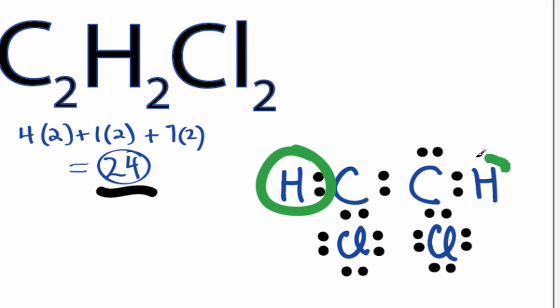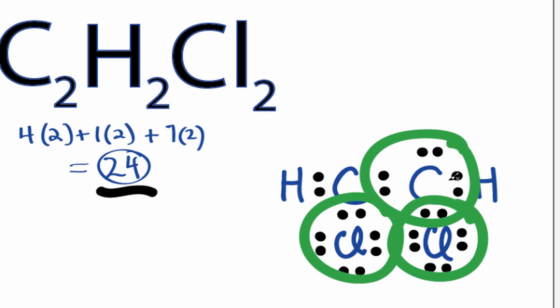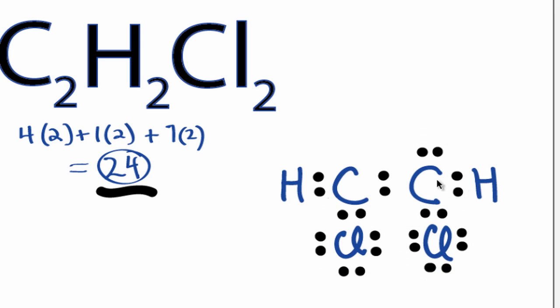Both hydrogens have 2 valence electrons, and that's all they need for a full outer shell. This carbon has 8, the chlorine has 8, and this chlorine has 8 as well. Their octets are completed. However, this carbon only has 6, so we're going to have to share electrons to form a double bond to get it to 8 valence electrons.